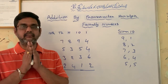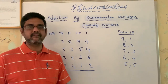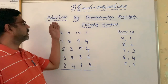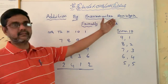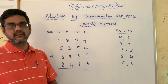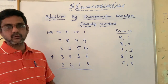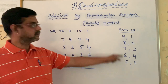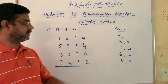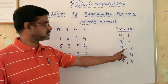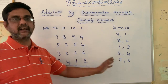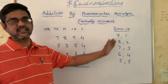Good afternoon my dear friends and dear students. Today I am going to explain about addition by Paramamitra Sankhya. The meaning of Paramamitra Sankhya is Friendly Numbers — two numbers whose sum is 10 are called friendly numbers. Here: 9 and 1, 8 and 2, 7 and 3, 6 and 4, 5 and 5 — these are some friendly numbers.